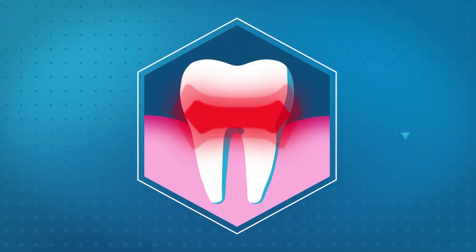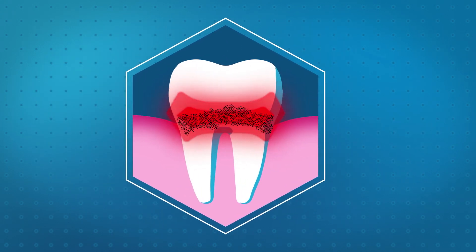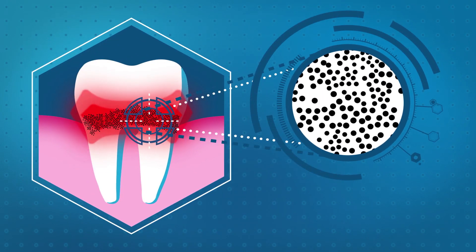Sensitivity occurs when the dentin, a porous tissue in your teeth, becomes exposed. The dentin has microscopic channels called tubules which are pathways to the nerve.